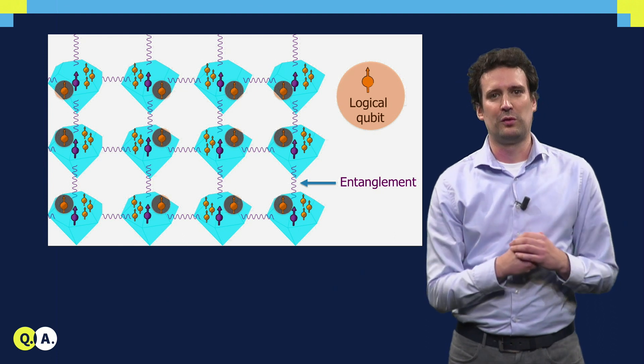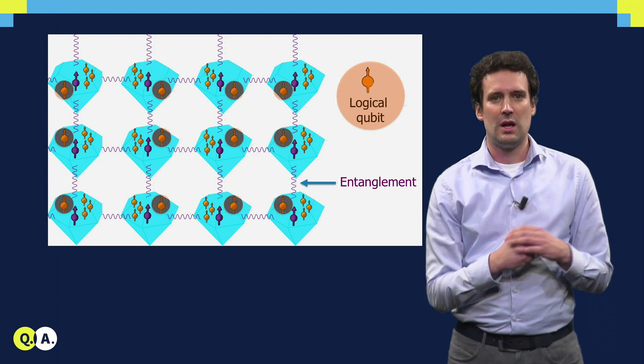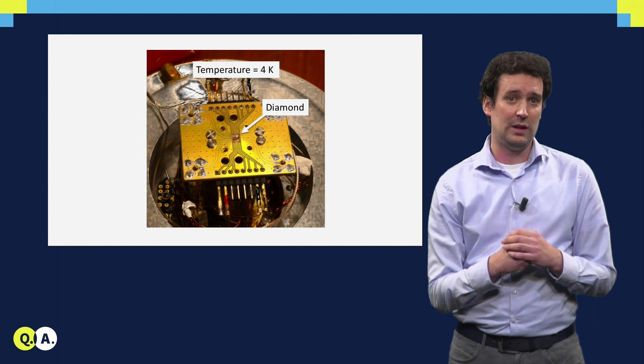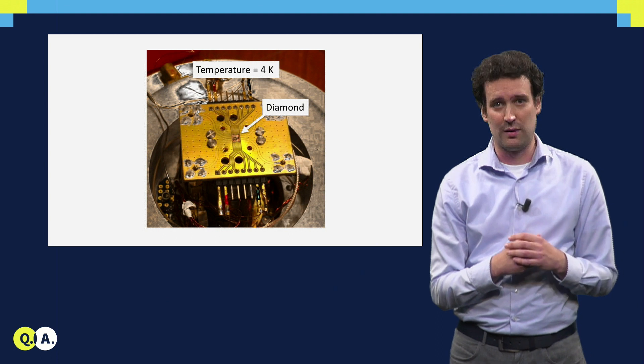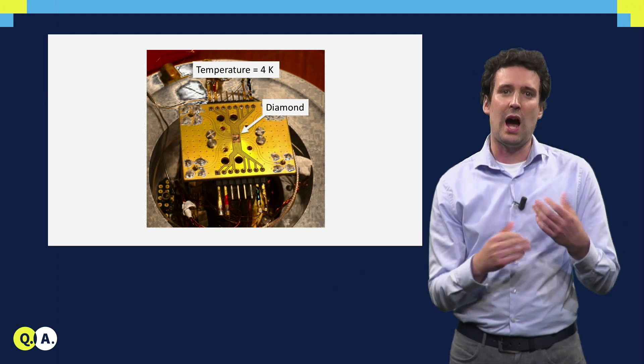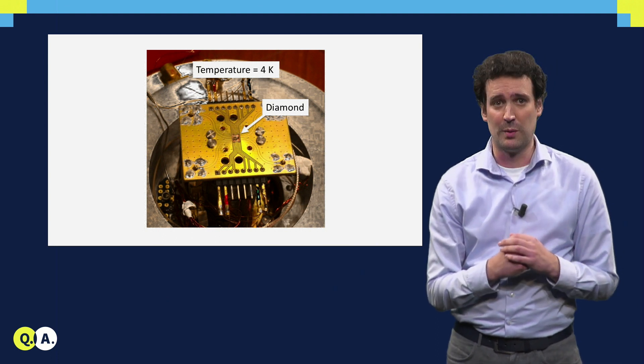What kind of samples do we use for this? Here you see an image of a little diamond wired up in a chip in a cryostat, which we bring to 4 Kelvin. That is quite a bit of higher temperature than you will typically see for other qubits.